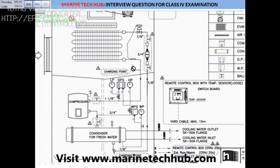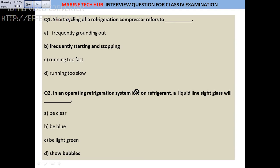If the cylinder is kept upright, gas will come out; if the cylinder is turned upside down, liquid will come out. Now, moving to the question and answer session. Question 1: What is short cycling of the refrigeration compressor? Short cycling means the compressor frequently starts and stops — that frequent starting and stopping is called short cycling.